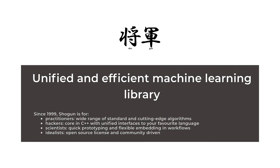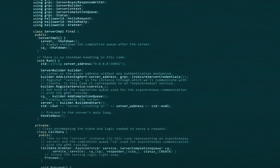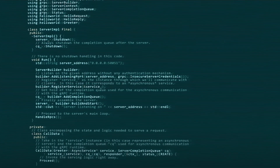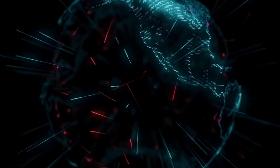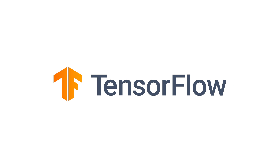At number 2 we've got Shogun. Shogun is an open source library for machine learning that offers a wide selection of unified and efficient ML methodologies. This accessible tool supports various languages and platforms such as Linux and Unix. In particular, Shogun focuses on making immense scale learning as easy as possible, with support for linking to various ML libraries.